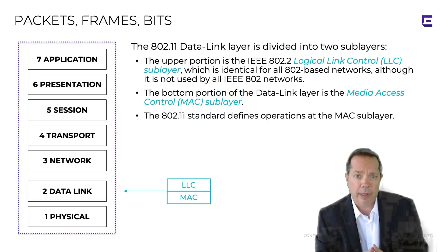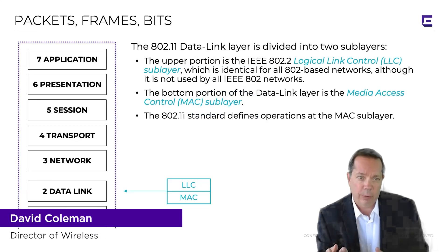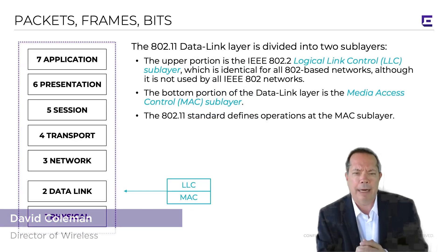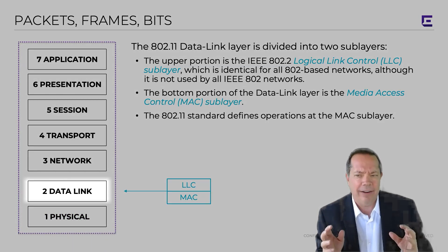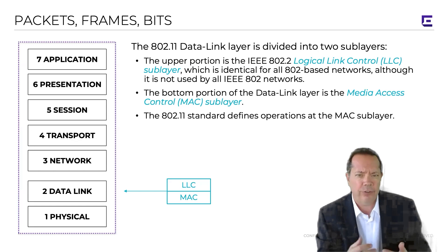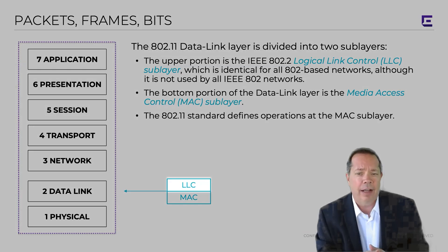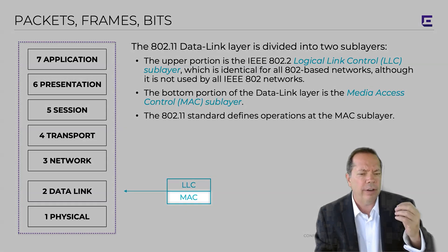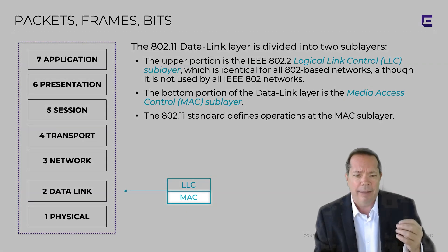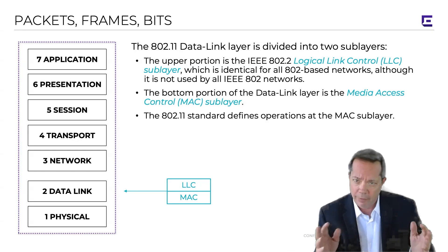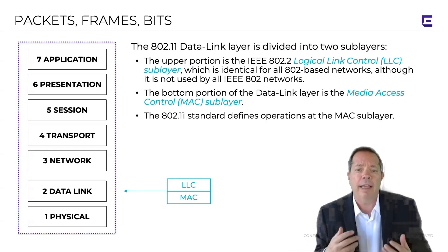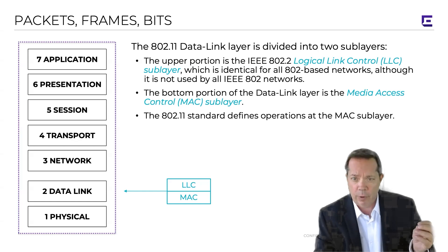As I mentioned in a previous video, Wi-Fi operates at layer two and layer one. So let's talk about layer two — the 802.11 data link layer. It's divided into two sub-layers, just like Ethernet is: the logical link control sub-layer, and the MAC sub-layer. The MAC sub-layer is the bottom portion of the data link layer, and that's where all the Wi-Fi magic happens. The 802.11 standard clearly defines Wi-Fi operations at that MAC sub-layer.